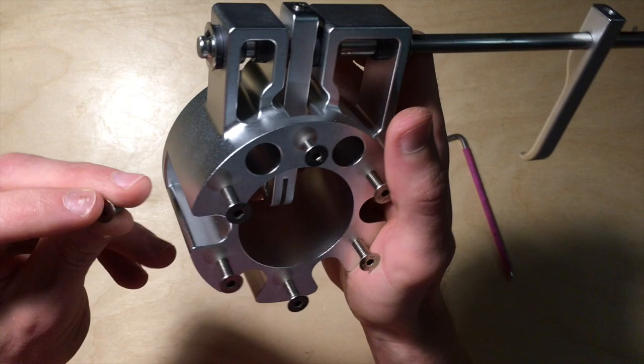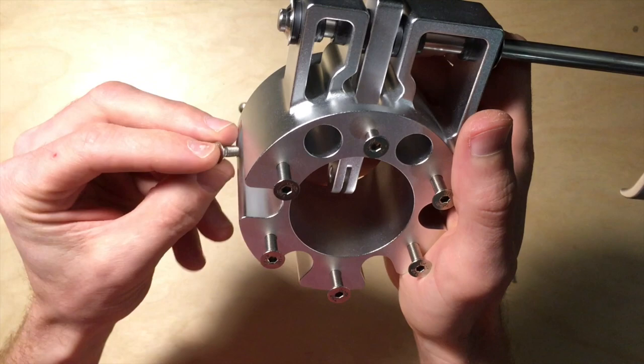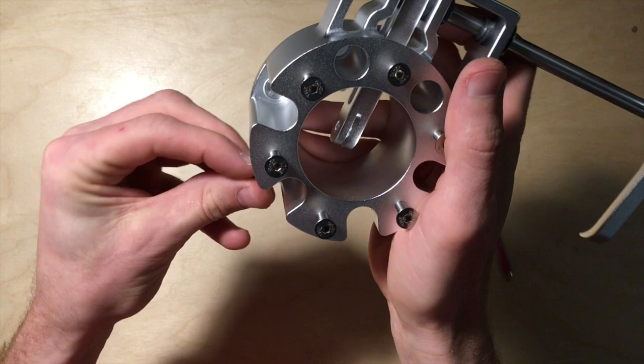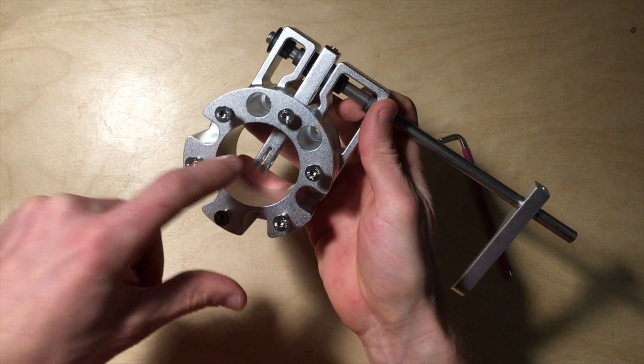And then to bolt it to the SS steering column or whatever steering column you're using, you'd use a M5 countersunk 10mm which we supply. Or if you need a longer one for your steering column, you can use longer bolts here. But they're an M5 countersunk bolt. And you just, you know, you'd bolt all the rest of the bolts in these holes here.